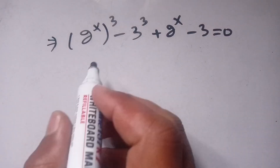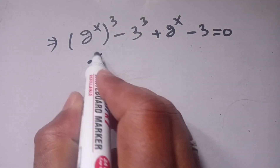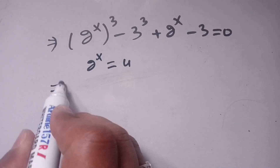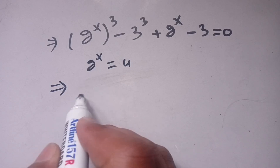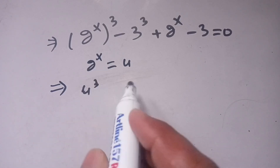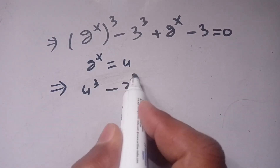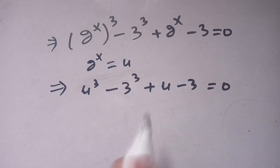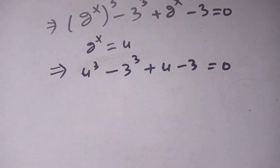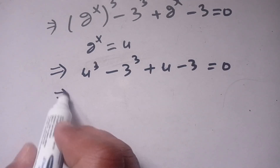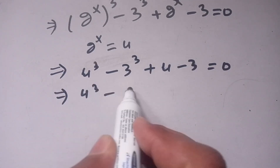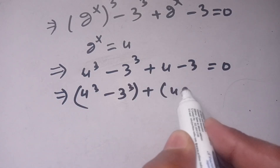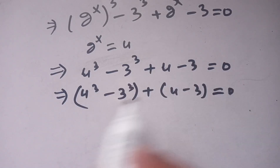Now we let u equal 2 to the power x. We can write the equation as u cubed minus 3 cubed, plus u minus 3, is equal to 0.